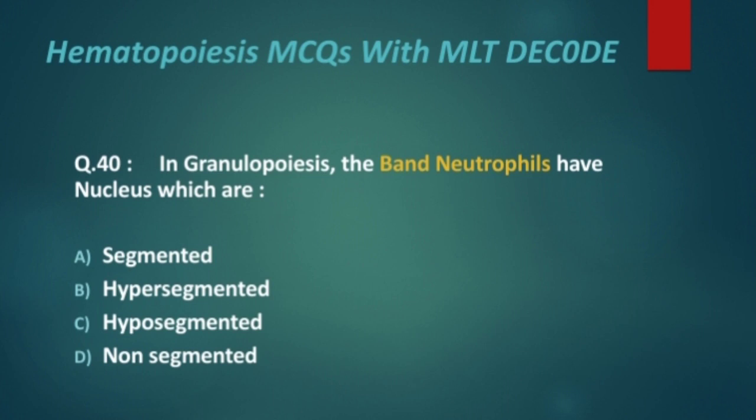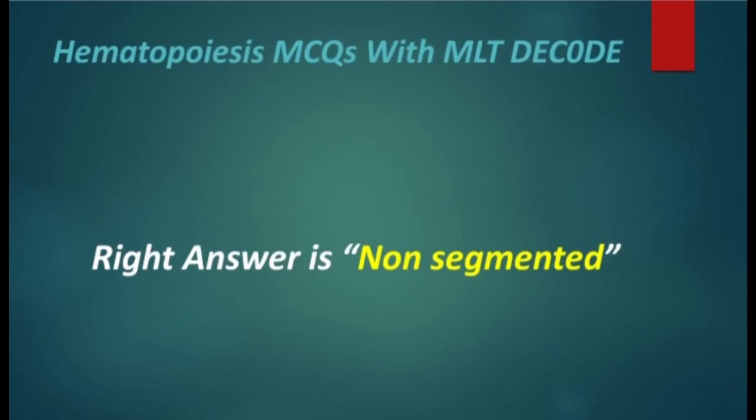Next: in granulopoiesis, the band neutrophils have a nucleus which is — options are: segmented nucleus, hypersegmented, hyposegmented, and non-segmented. The right answer is non-segmented.